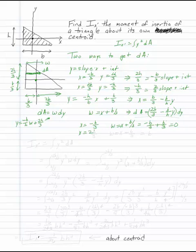If x equals 2b over 3, w equals x plus b over 3 gives you b, which means at the bottom, w is equal to b, which is also correct.